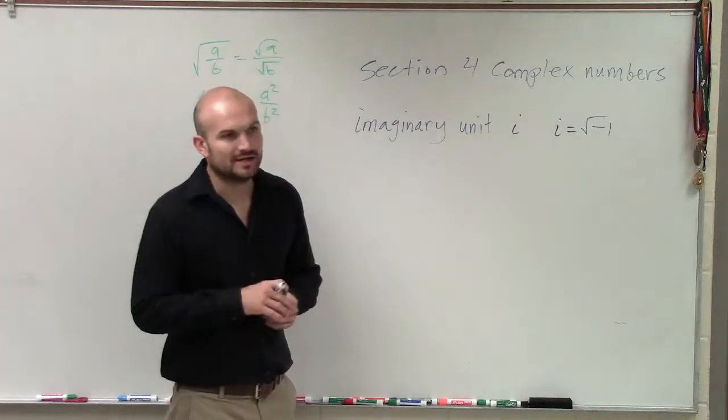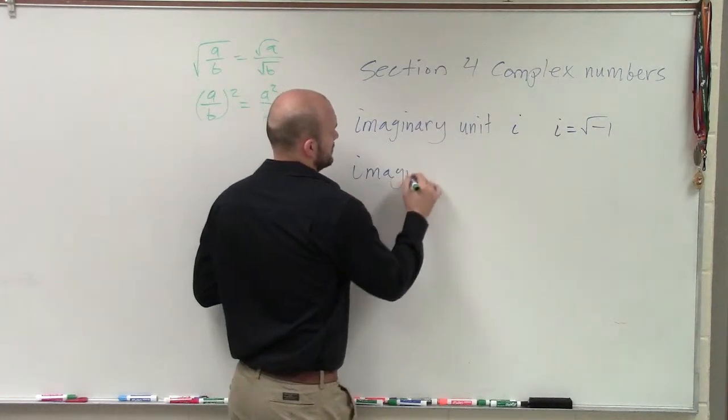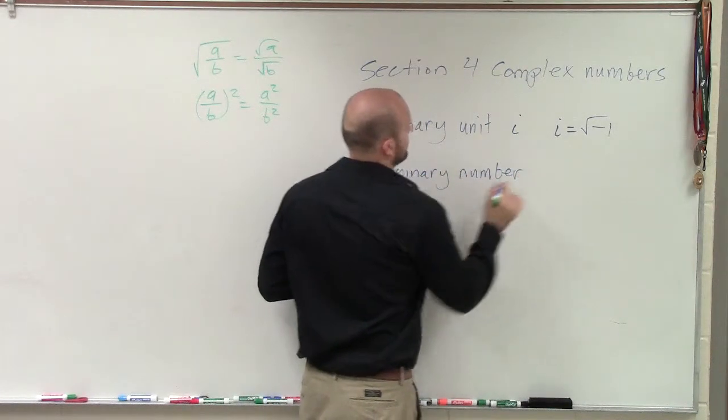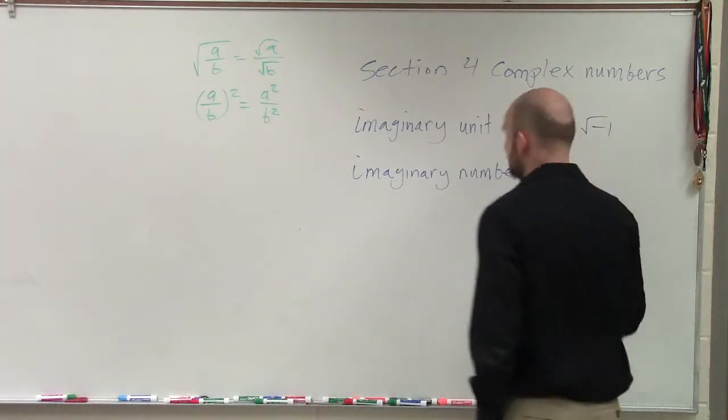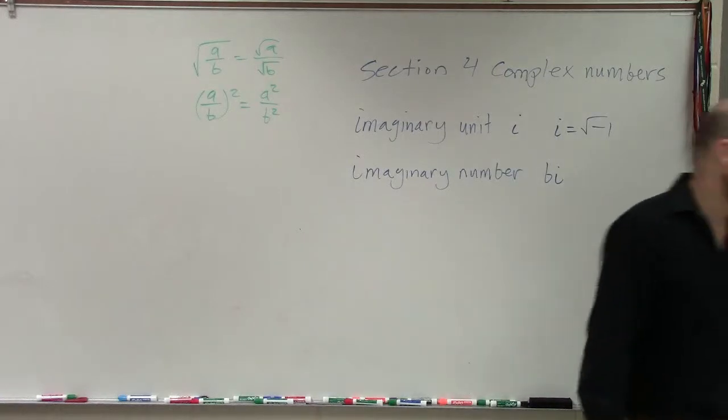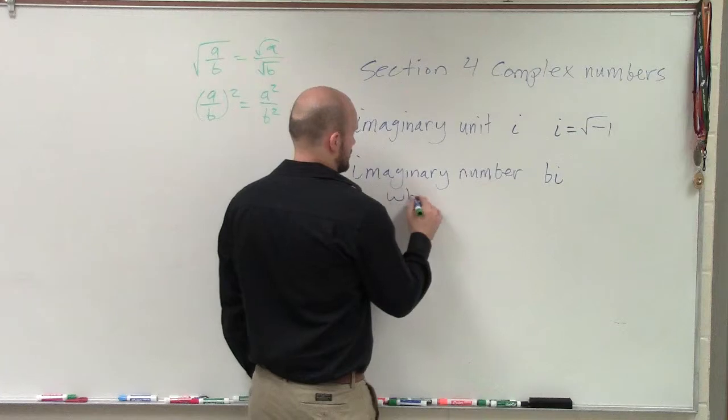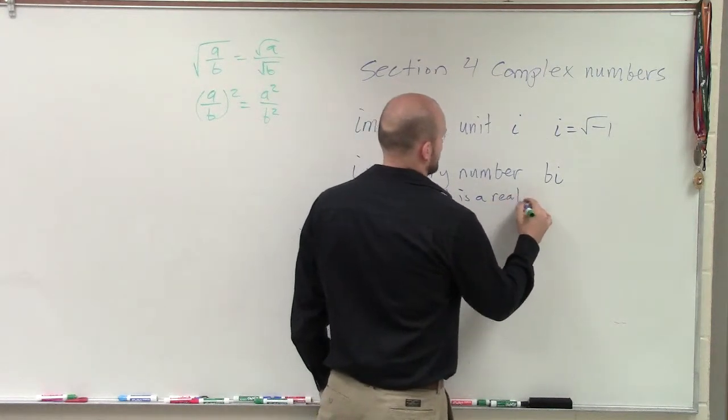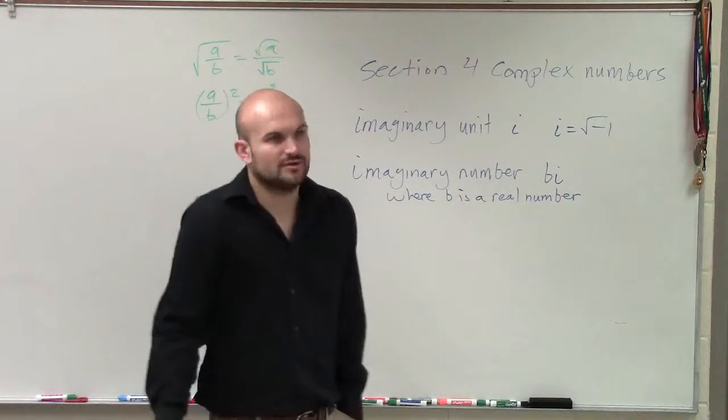So we have our imaginary unit is i. Then we have an imaginary number. So our imaginary number we come in the form of bi. What? B? Where does B come from? Bi, where does B come from? Well, where B is a real number.